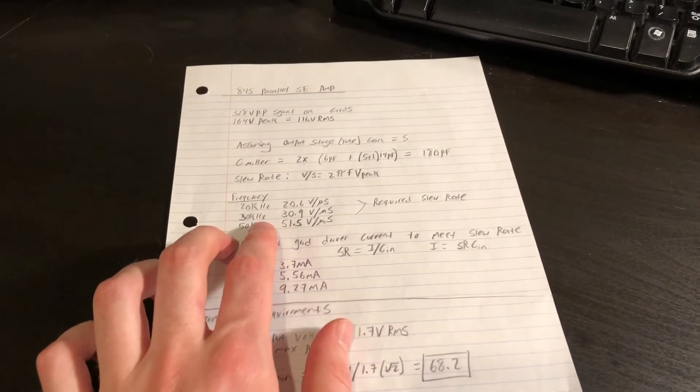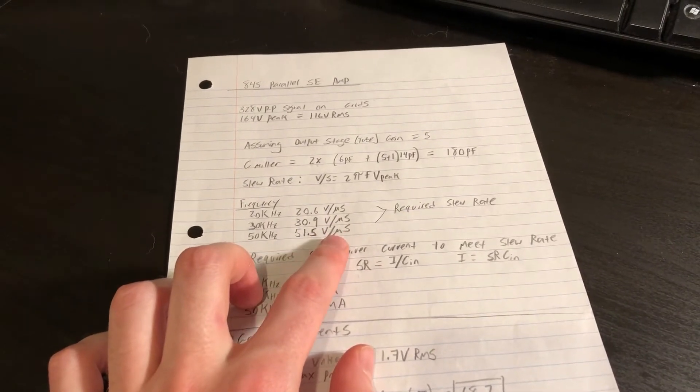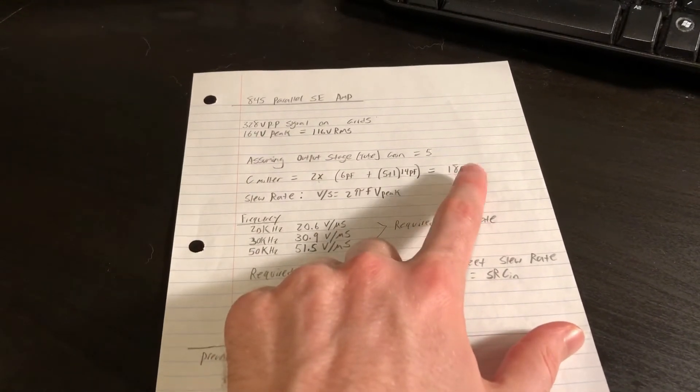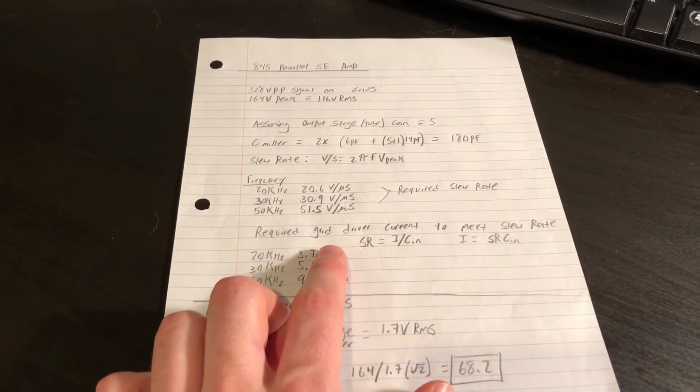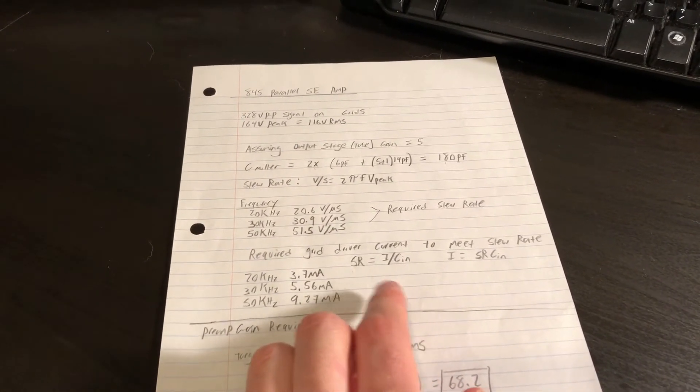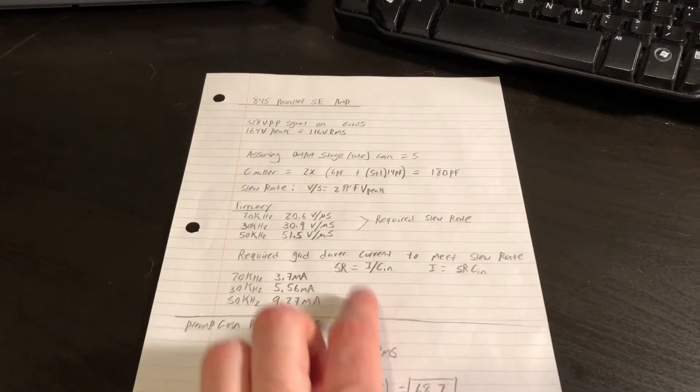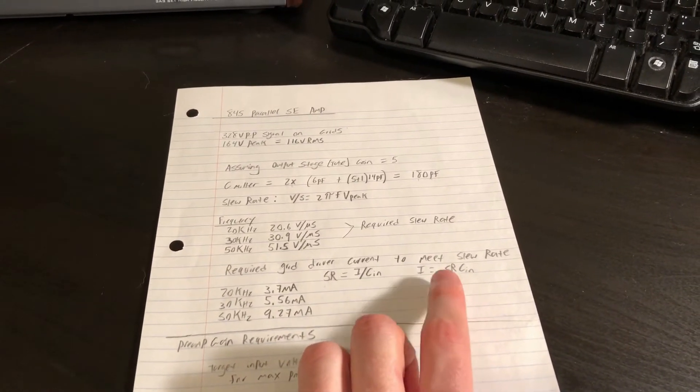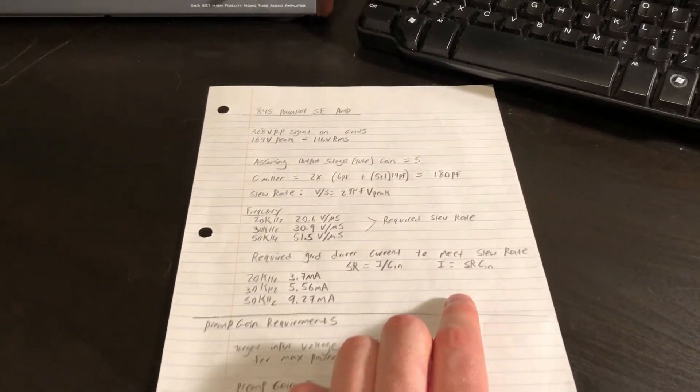Okay, so sorry for that tangent, but now that we know our slew rate requirements for 50 kilohertz, 51.5 volts per microsecond would be our required slew rate in order to drive this 164 volt peak into our 180 picofarad load. From there, we can then determine what the current requirement is from our driver. So the current into any capacitive load is I equals C dV/dt, where dV/dt is our slew rate, change in voltage per change in time. So we can plug our slew rate into that I equals C dV/dt equation for capacitor, rearrange for I, and we can figure out what current we need to slew into this capacitance in order to meet our slew rate requirement.